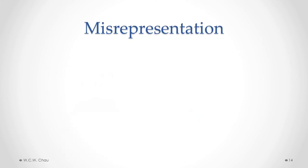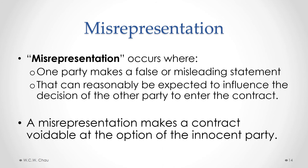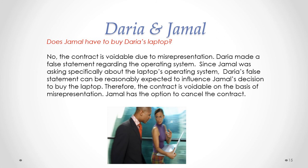The last contractual defect we'll look at is misrepresentation. A misrepresentation occurs where one party makes a false or misleading statement that can be reasonably expected to influence the decision of the other party to enter the contract. A misrepresentation makes a contract voidable at the option of the innocent party. Does Jamal have to buy Daria's laptop? The answer is no. The contract is voidable due to misrepresentation. Daria made a false statement regarding the operating system, and since Jamal was asking specifically about the laptop's operating system, Daria's false statement can be reasonably expected to influence Jamal's decision to buy the laptop. Therefore, the contract is voidable on the basis of misrepresentation, and Jamal has the option to cancel the contract.